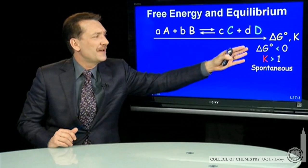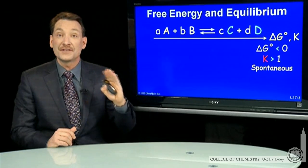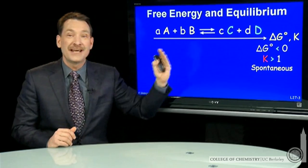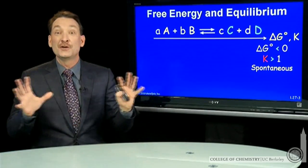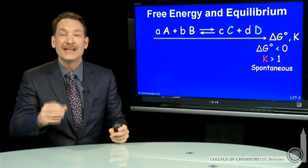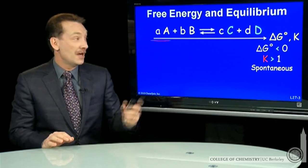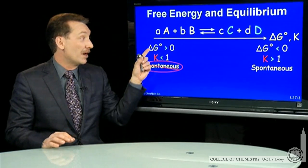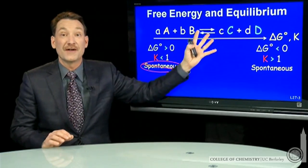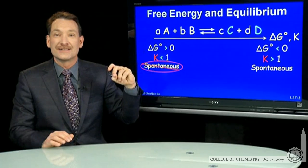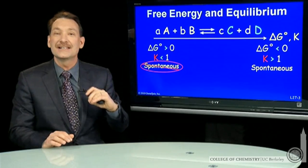If both of these favor products, "spontaneous" is the label we give them. Notice that the label spontaneous means products are favored at equilibrium — it doesn't have anything to do with the rate of the reaction or how fast we get there. It just means that once we get to equilibrium, the products are favored. When delta G standard is positive, I tend to go back towards reactants to get to equilibrium.